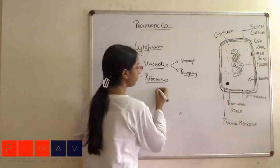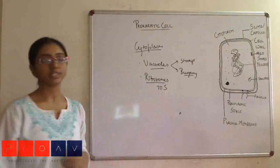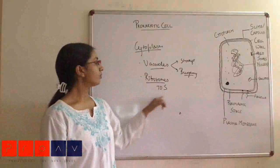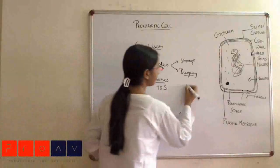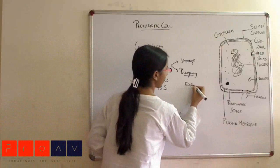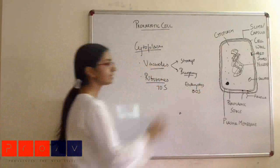Also, the ribosomes present here are 70S ribosome. S stands for the Svedberg unit of sedimentation coefficient. So these 70S ribosomes are there. In eukaryotes, you would have 80S ribosomes.